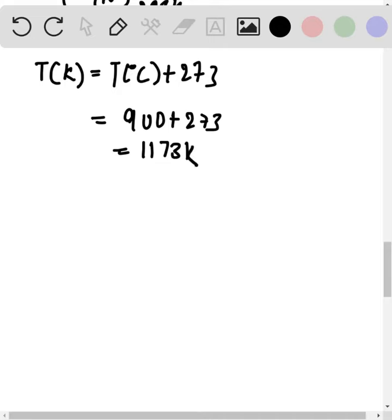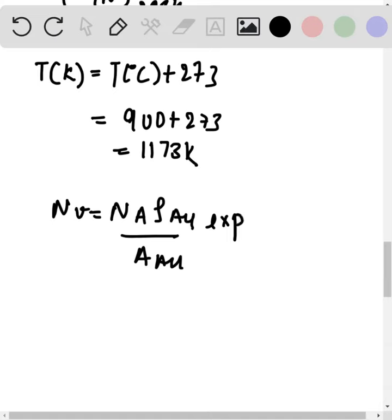It is equal to 1173 Kelvin. Now calculate the number of frequencies: nv equals to NA into rho AU divided by AAU into exponential whole raised to the power minus q divided by kT.